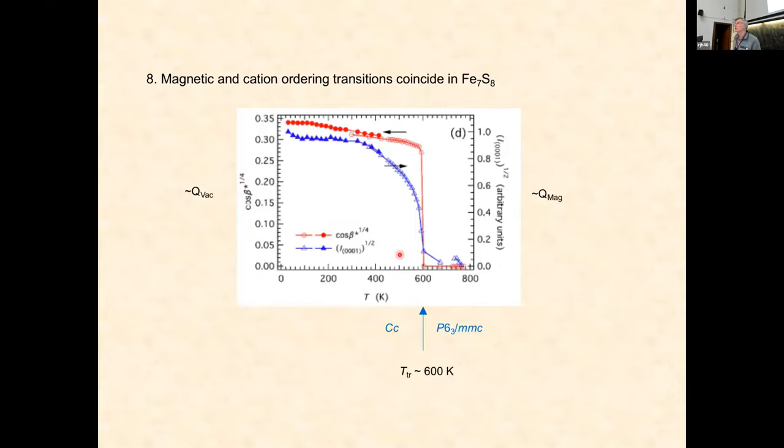The other thing about Fe7S8 which I was curious about is how closely does the cation vacancy ordering couple with the magnetic ordering? Do they have separate transition temperatures or are they identical? Turns out it's identical, you can't separate them. Here we've got the vacancy ordering order parameter extracted from the monoclinic angle, and on the right we've got the magnetic order parameter. The blue is magnetic ordering and the red is vacancy ordering, and you see they have exactly the same transition temperature. These are very strongly coupled.